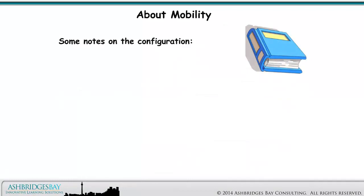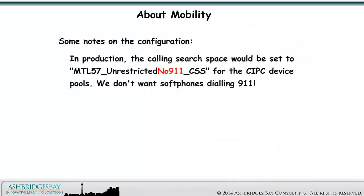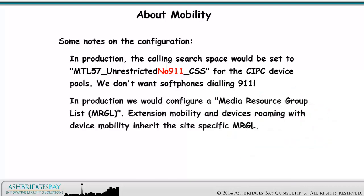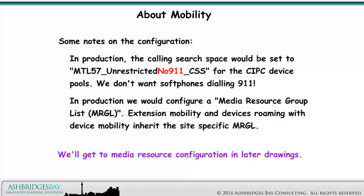Some notes on the configuration. In production, the calling search space would be set to Montreal 57 unrestricted no 911 calling search space for the CIPC device pools — we don't want soft phones dialing 911. In production, we would configure a media resource group list (MRGL). Extension mobility and devices roaming with device mobility inherit the site-specific MRGL. We'll get to media resource configuration in later drawings.